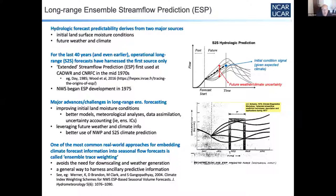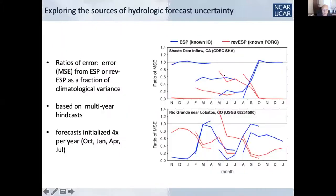Some work we did starting around 2004 was to understand the interplay between these two sources of predictability. I had been making a lot of ensemble hindcasts and presenting them at conferences. I thought about reversing the concept of the ESP forecast: the ESP forecast basically combines a well-known initial condition with uncertainty in the future climate forecast. I thought, what if we look at the role of uncertainty in the initial condition contrasted with a perfect climate forecast in the future? I called this reverse ESP. By contrasting the skill from these two ways of making a forecast, you can start to understand the persistence of forecast signal or uncertainty in either component as you go to longer forecast lead times.